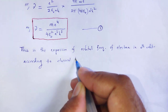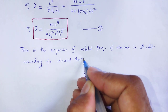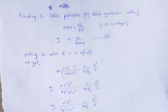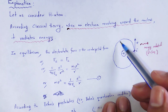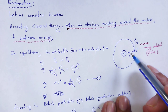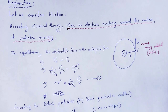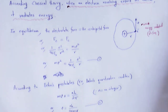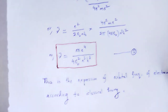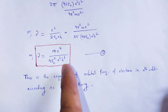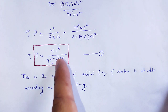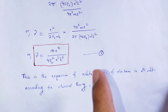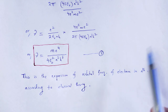According to classical theory, the frequency of that electron — when the electron revolves around the nucleus in the nth orbit — then the radiation emitted by that electron is given by me⁴ / (4ε₀²n³h³), according to classical theory.